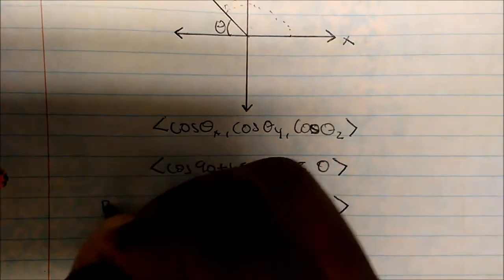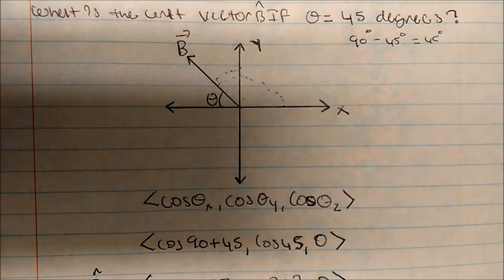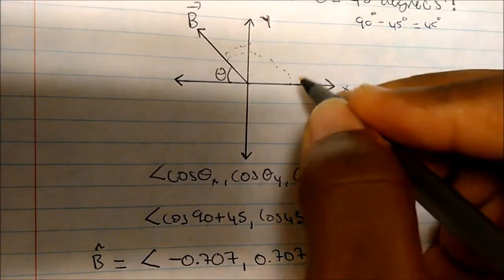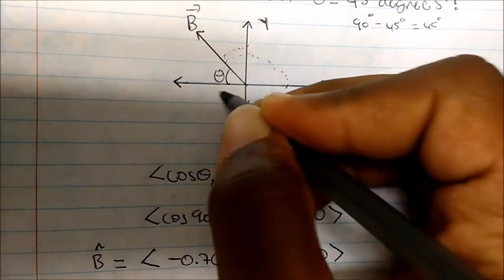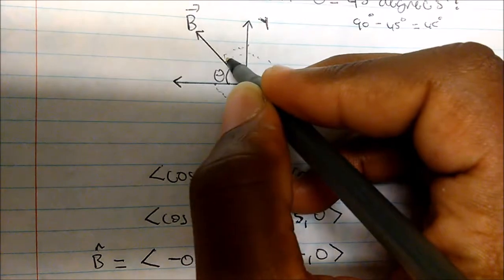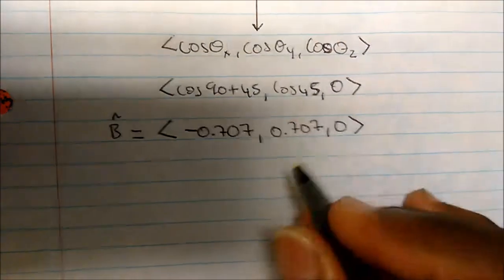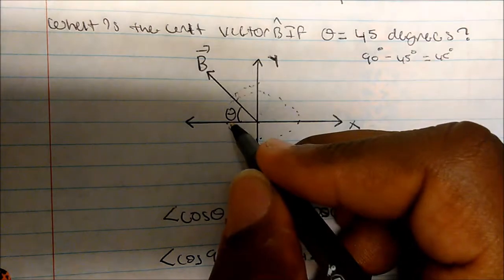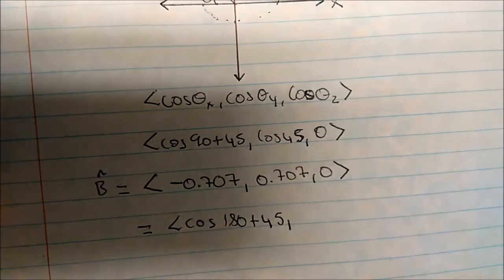So this will be b-hat — that's our unit vector, and that's how we find it. Now there's a different way of doing it. We could also go the other direction. Starting from x, if I go all the way around covering 90, then another 90, then up 45, another way of doing the x-direction would be cosine of 180 plus 45, since 90 plus 90 is 180.